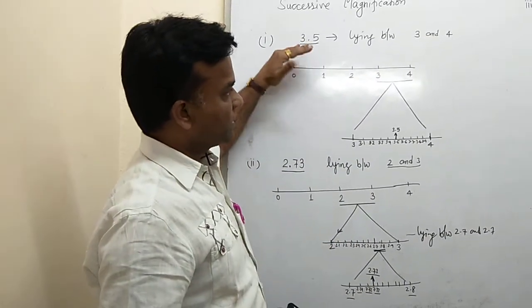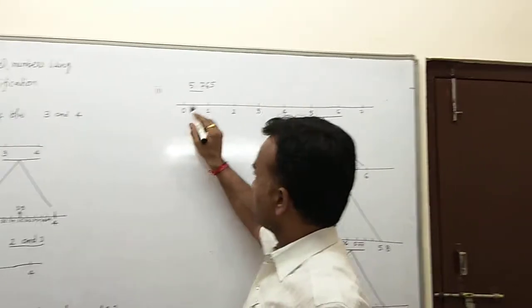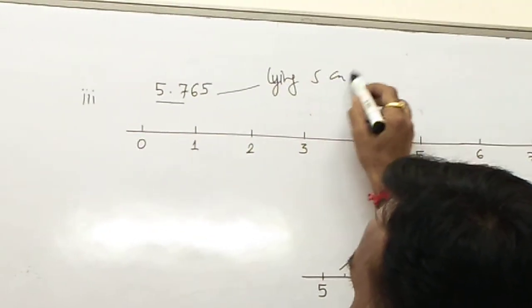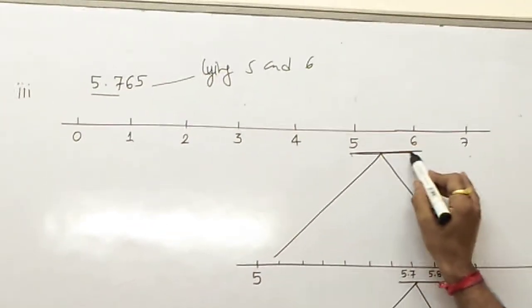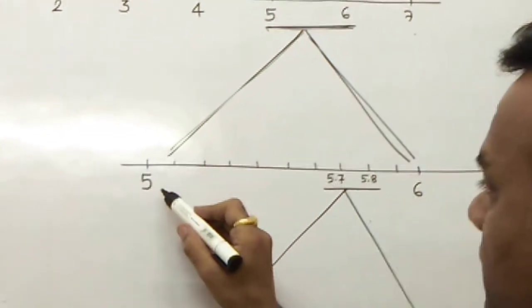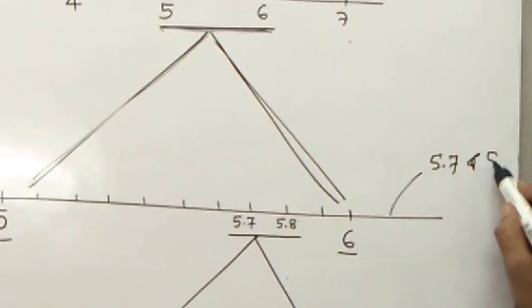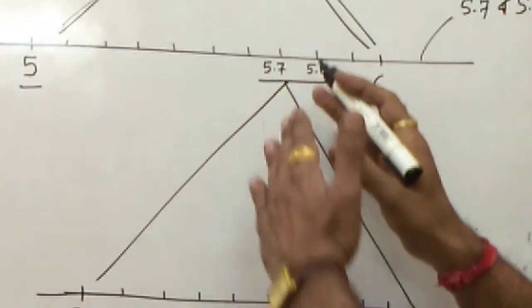Here we have a one-place digit example, then a two-place digit example. Now for the three-place example, we have 5.765. It lies between 5 and 6. We underline 0 to 7 on the number line. We enlarge between 5 and 6, dividing into 10 parts. Our number 5.765 starts with 5.7, so it lies between 5.7 and 5.8. We underline 5.7 and 5.8.